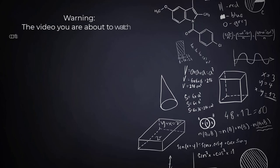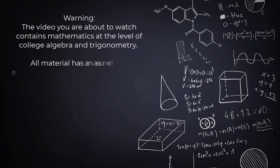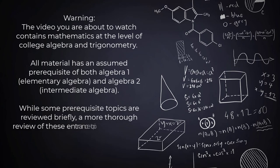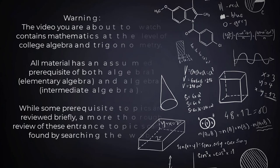Warning! The video you're about to watch contains mathematics at the level of college algebra and trigonometry. All material has an assumed prerequisite of both Algebra 1, which is Elementary Algebra, and Algebra 2, which is Intermediate Algebra. While some prerequisite topics are reviewed briefly, a more thorough review of these entrance topics can be found by searching the web.